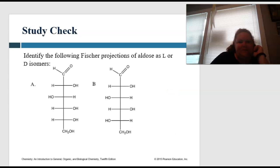Let's look at another one. Identify the following Fischer projections as aldose L or D isomers. So L isomers or D isomers. Remember L is the... well, I'm not going to tell. So pause and come back.